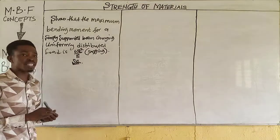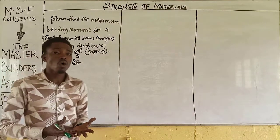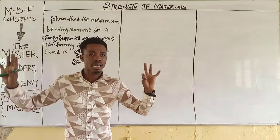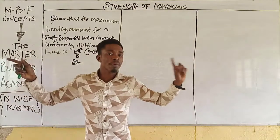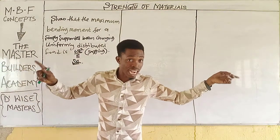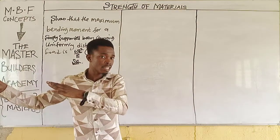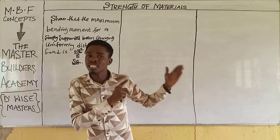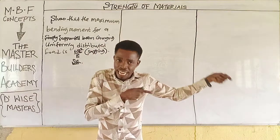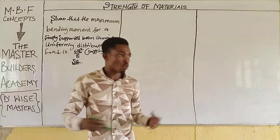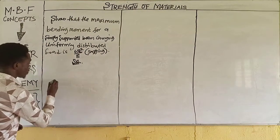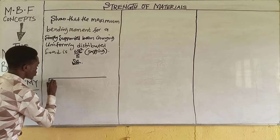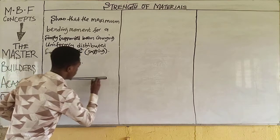The very first thing you must do is know what a simply supported beam is. A simply supported beam is a beam that is supported at one end with a roller and at the other end with a pin.